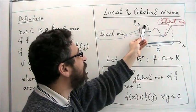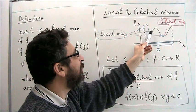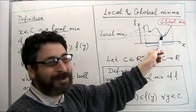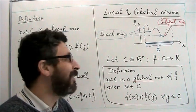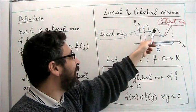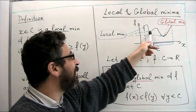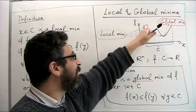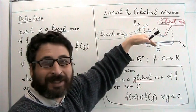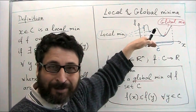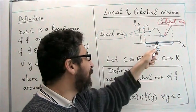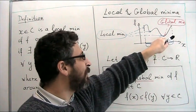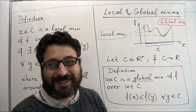These points we call local minima, and these points we call global minima. Local minima means that in the neighborhood of a point, it has the lowest value. And global minima — the value is the lowest over all of set C.